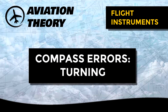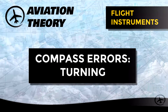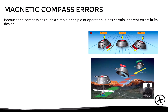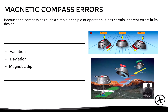Today we will talk about the magnetic compass errors caused by turning. As mentioned in previous videos, the magnetic compass is basically a magnet that is free to rotate about a pivot point. Since it has such a simple design, it has certain inherent errors that pilots should be aware of. These errors are magnetic variation, compass deviation, and magnetic dip, which is divided into acceleration error and turning error.